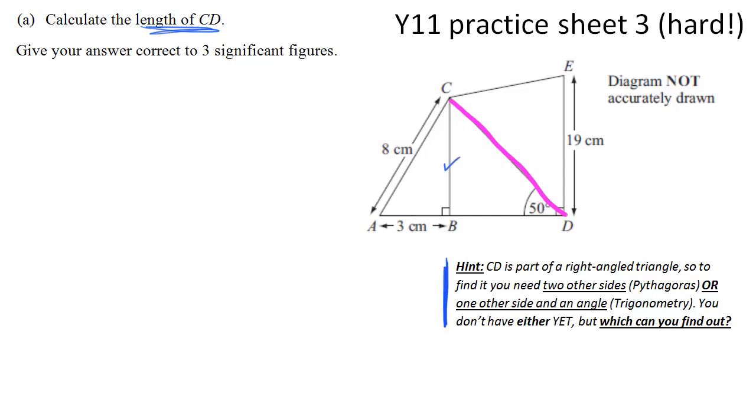So let's look at the sides that we've got. Well, BC, I can find that out, because it's part of a separate right-angled triangle. BD, I can't see how to work that out. So Pythagoras is out the window, but I do have this angle here, 50 degrees, which means I can use trigonometry to find CD. That means first, I need to find BC. So that's going to be using Pythagoras.